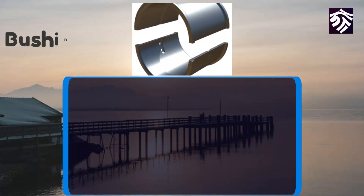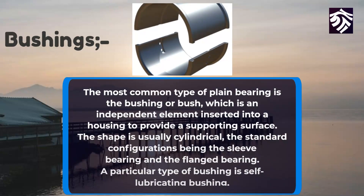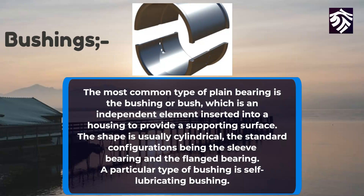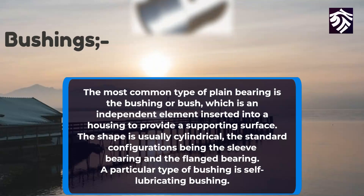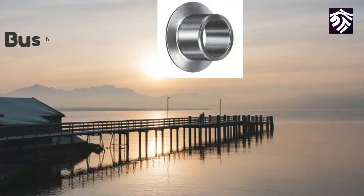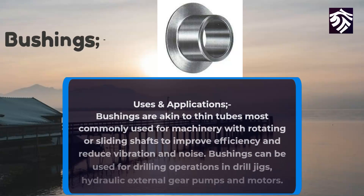Bushings: the most common type of plane bearing is the bushing, or bush, which is an independent element inserted into a housing to provide a supporting surface. The shape is usually cylindrical, with standard configurations being the sleeve bearing and the flange bearing. A particular type of bushing is the self-lubricating bushing.